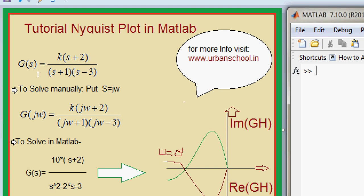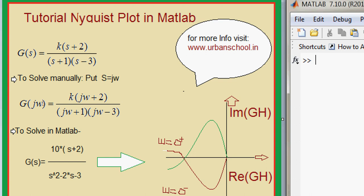G(s) is equals to k times (s+2) divided by (s+1)(s-3). Normally if I want to solve this particular problem manually, then I will put s is equals to jω.